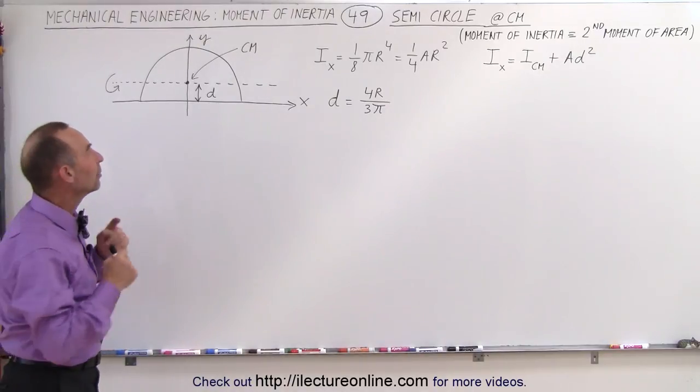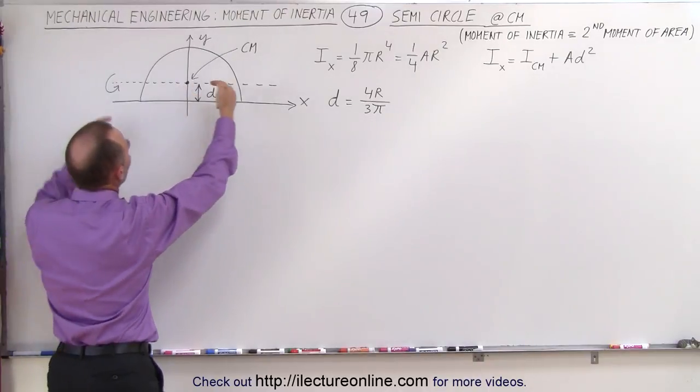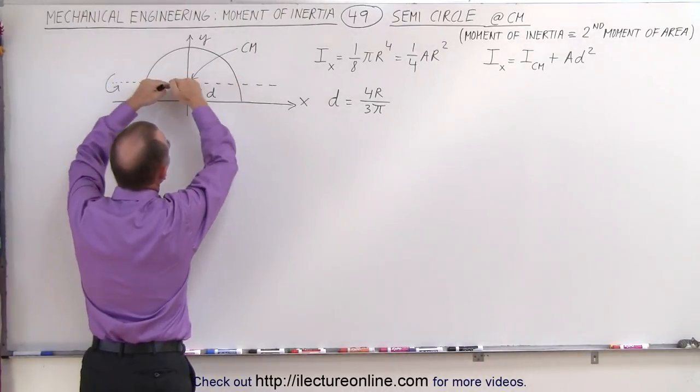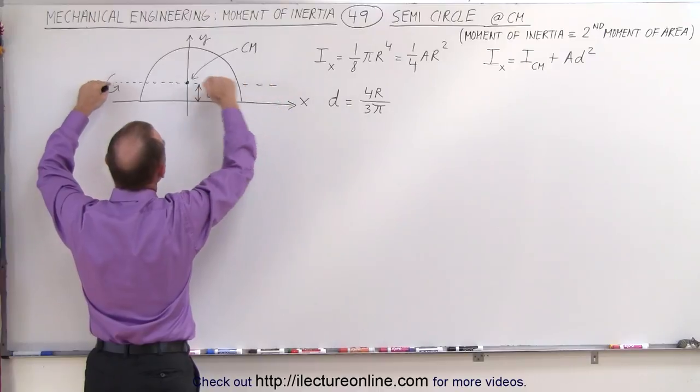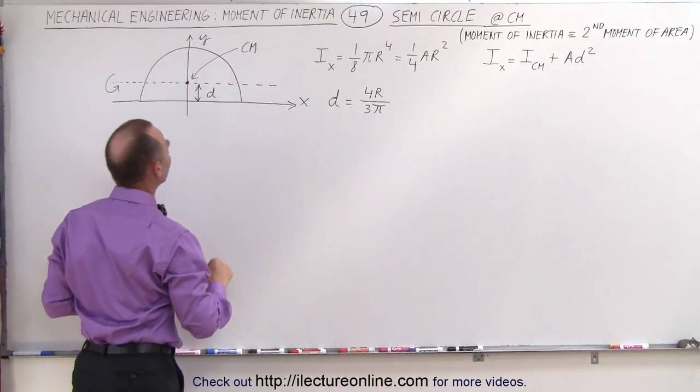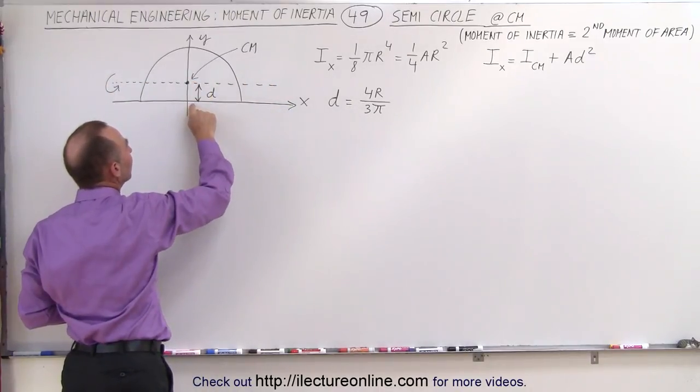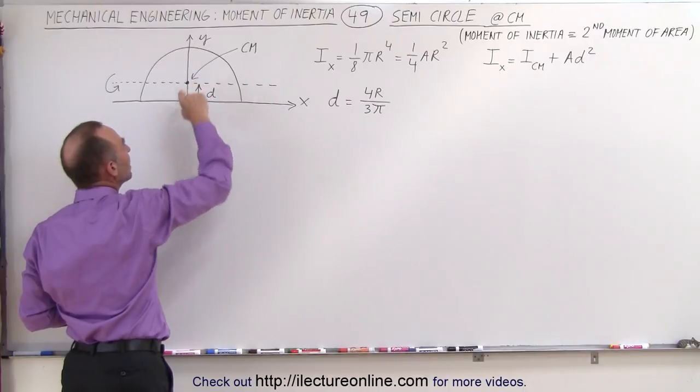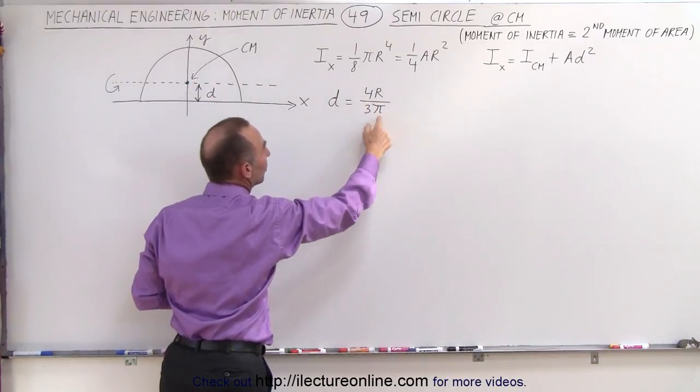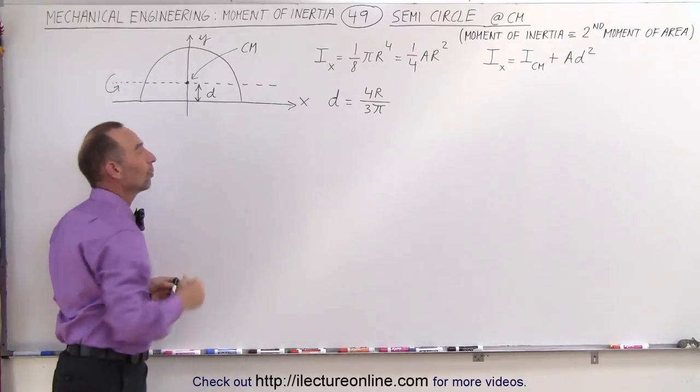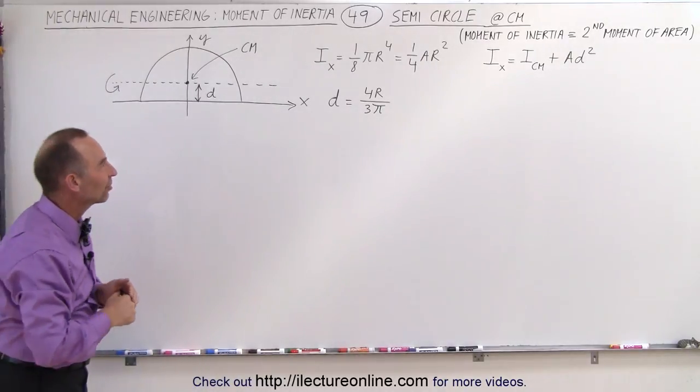But now we're trying to find the moment of inertia relative to its center of mass, as if we're going to spin that semicircle around this line right here that goes right through the center mass. So the displacement from the x-axis to the center mass is equal to d, and that happens to be 4r divided by 3 pi, that's what's calculated in a previous section.